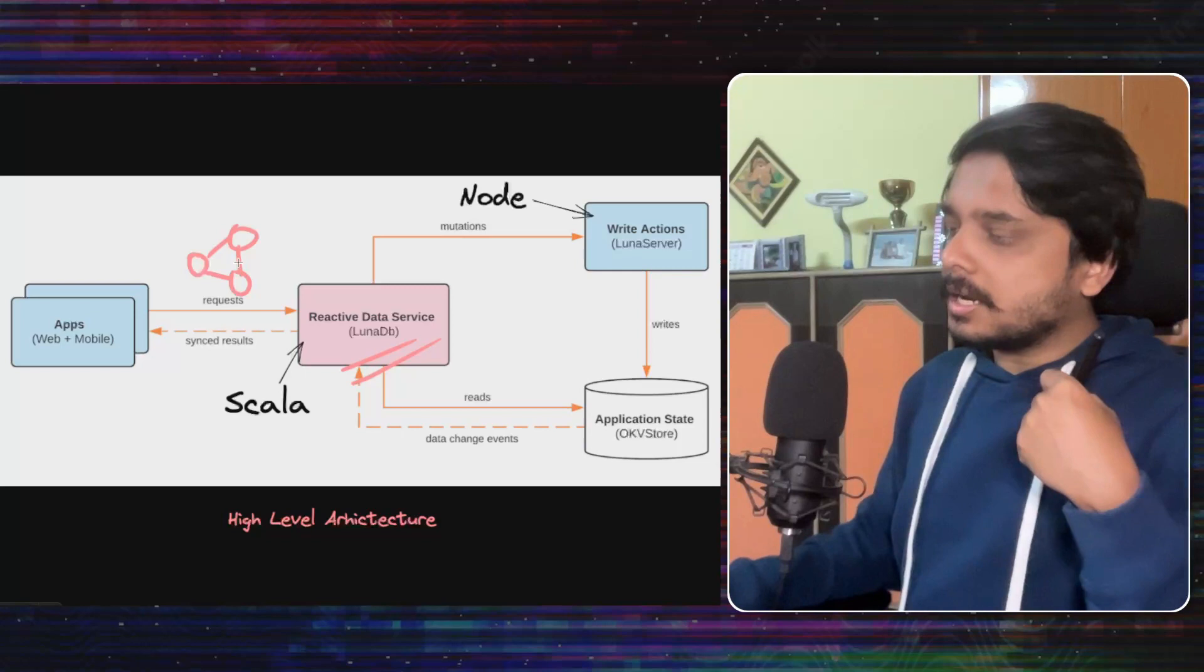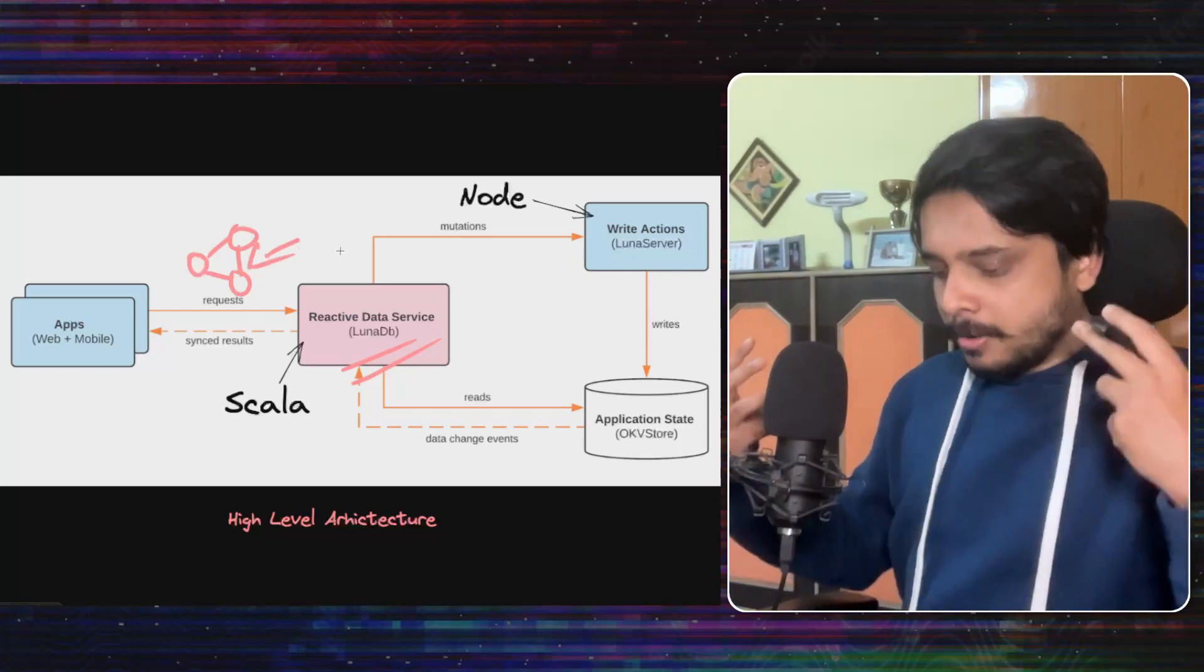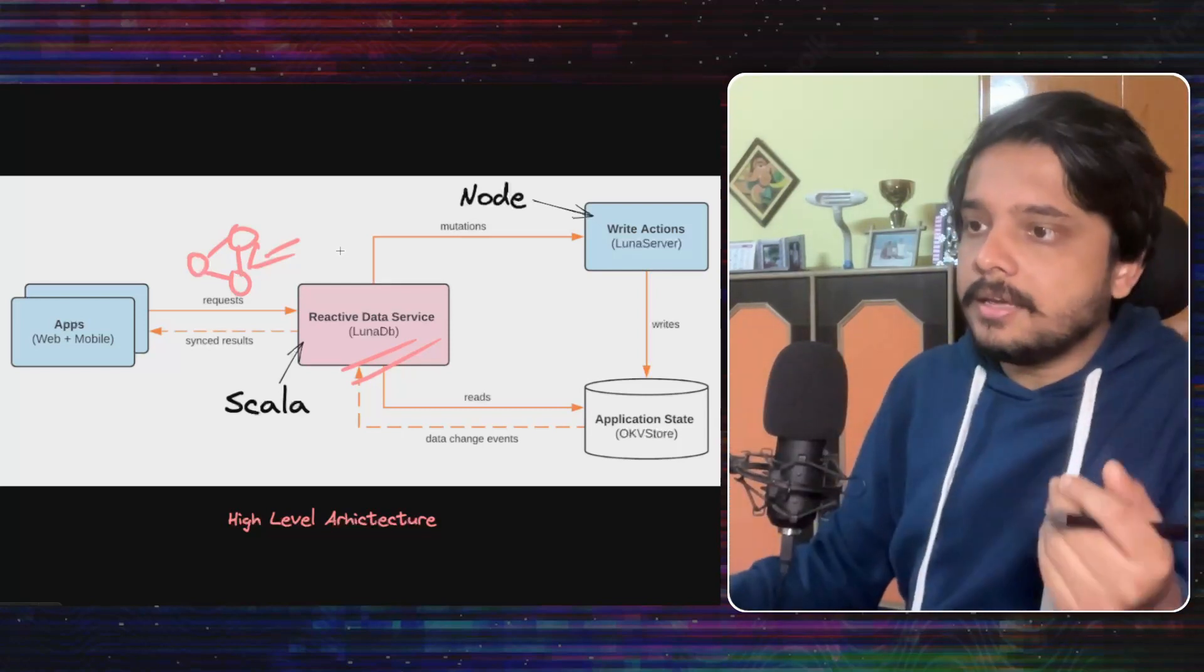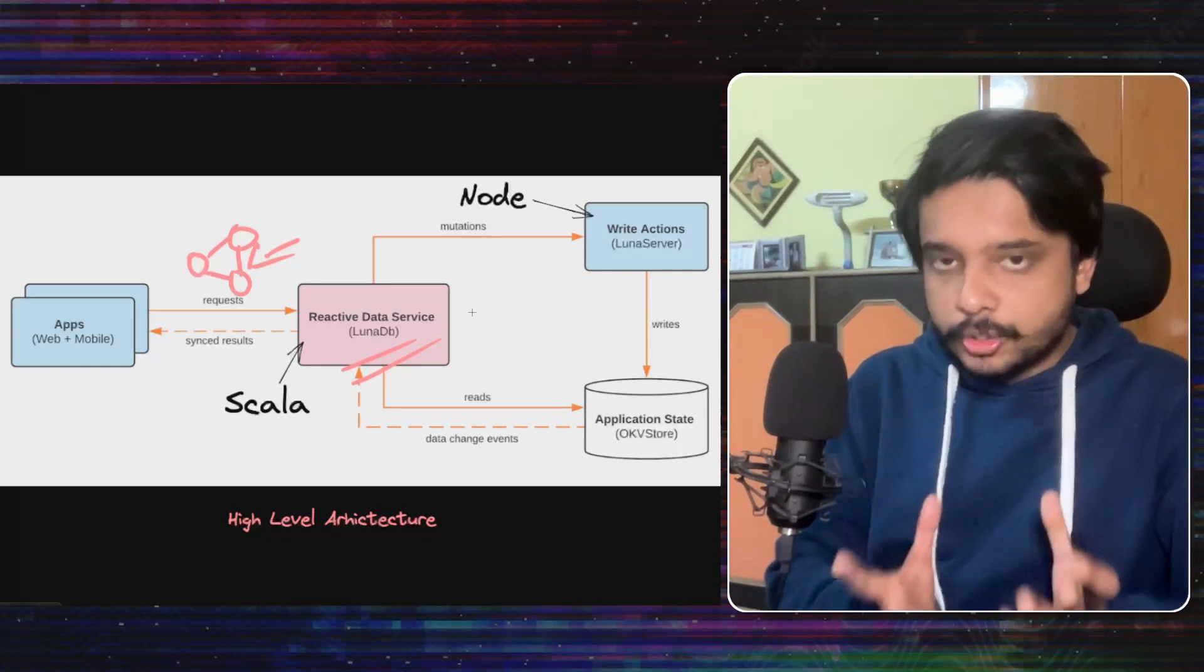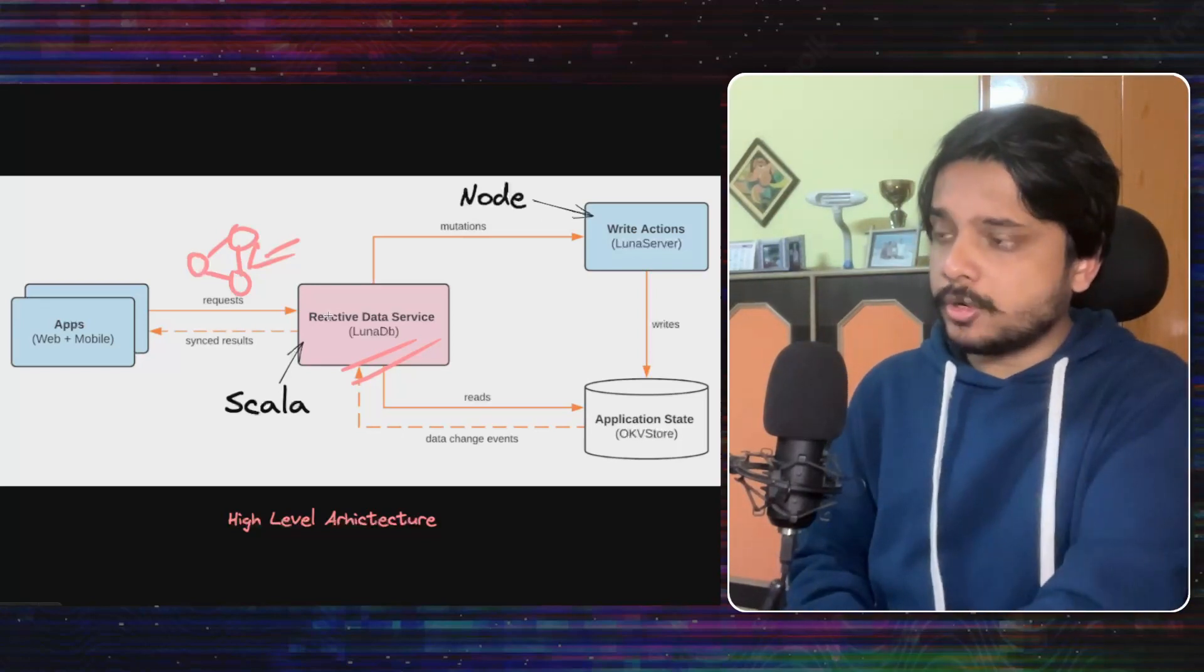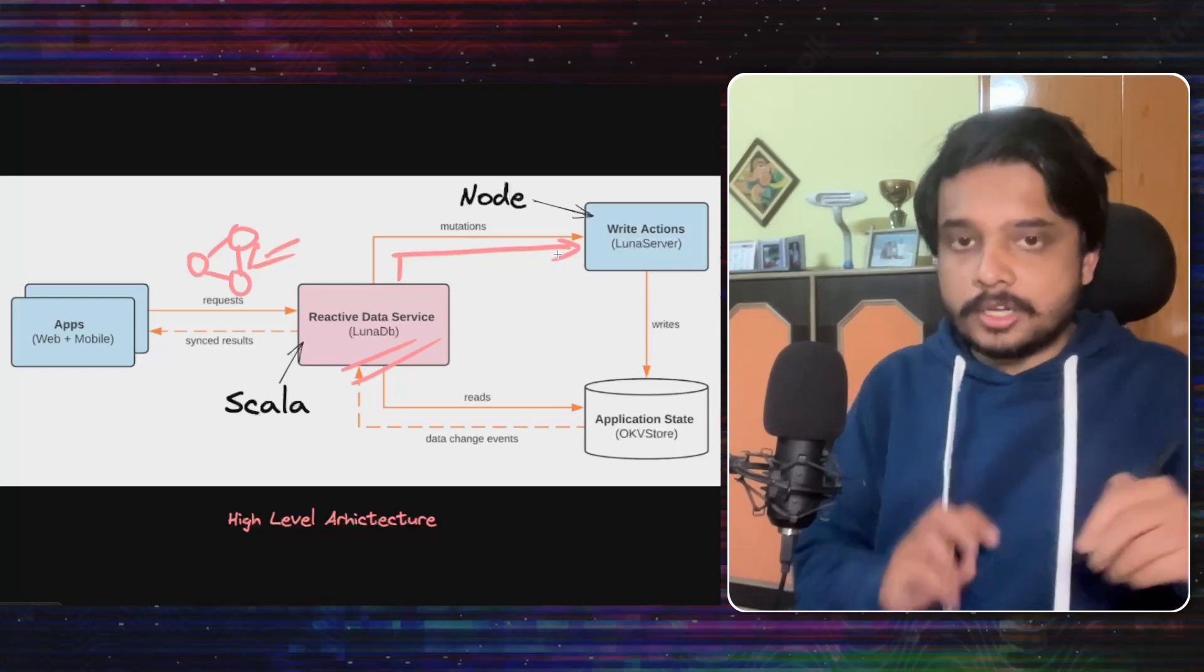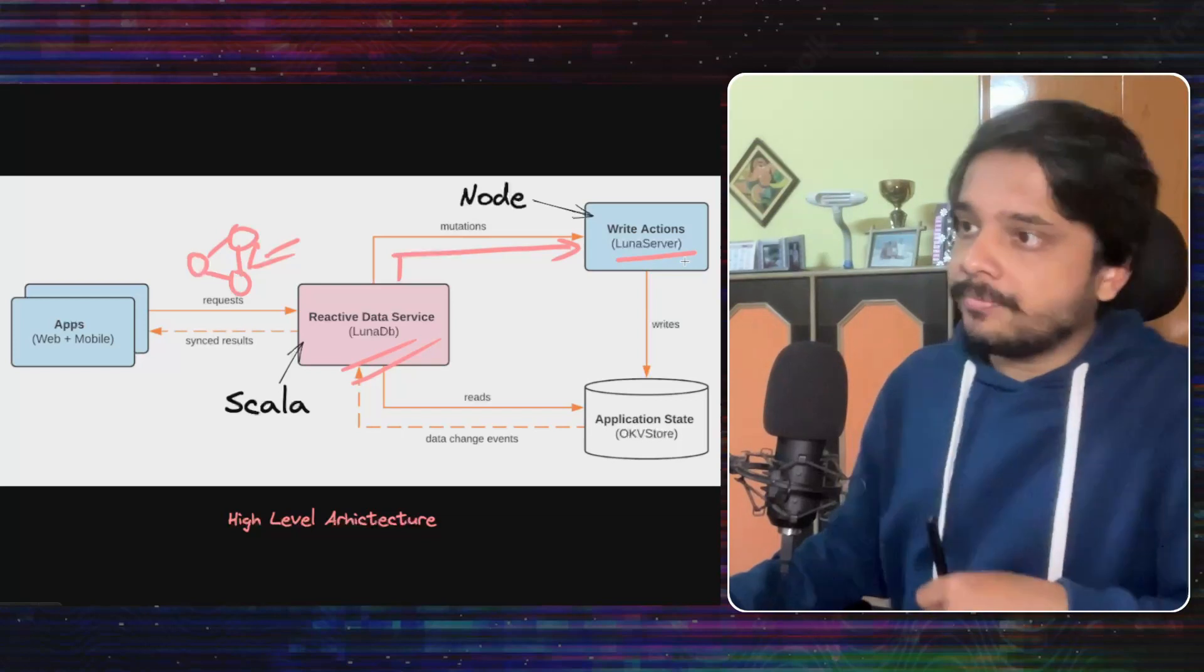Now, the client has also subscribed to this data, which means that whenever there is some change in the data in the backend, it will be immediately updated in the client. And let's see how this is happening. Let's say I put some comment on some task, that will be kind of a change on their backend data model. So what happens is, they will send that change or that mutation in their language to a Luna server.